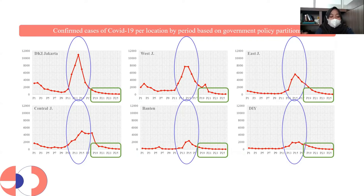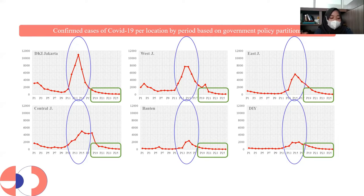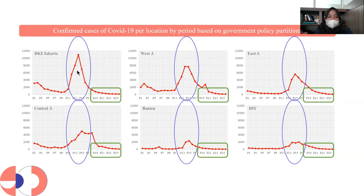This figure shows a plot of average positive confirmed COVID-19 cases per location by period, based on government policy partitions. Jakarta showed an increase in positive cases at the 14th partition, at which point the government implemented the Emergency PPKM policy. The average number of cases began to decline since the 19th partition. The peak spike for Jakarta, West Java, East Java, Central Java, Banten, and Yogyakarta occurred around partitions 13 to 15.